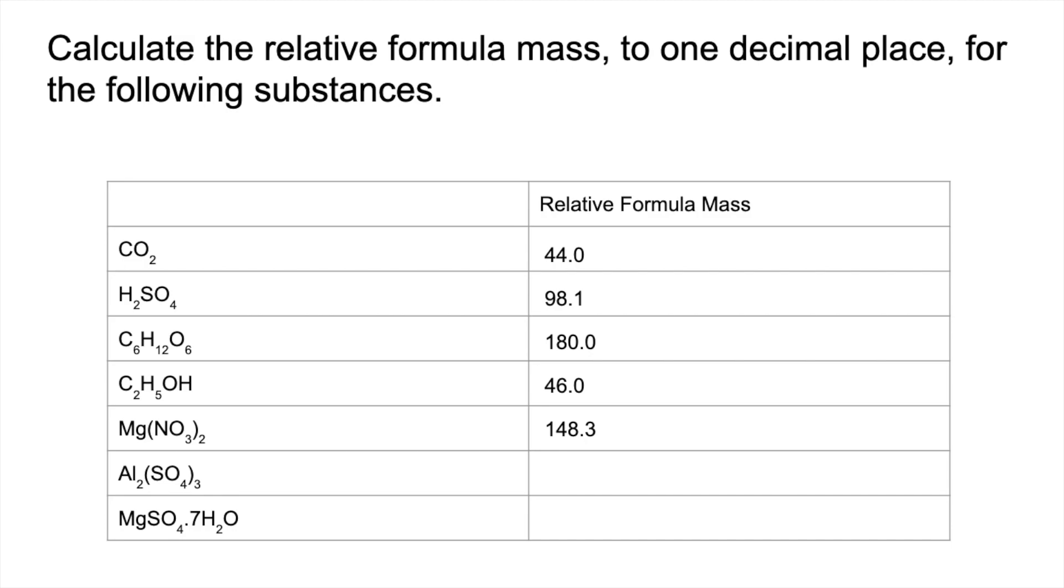Next one, aluminium sulfate, so we've got to double the aluminium and treble the mass of the sulfate. And that comes out at 342.3.